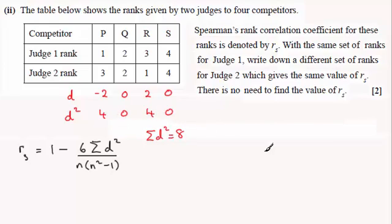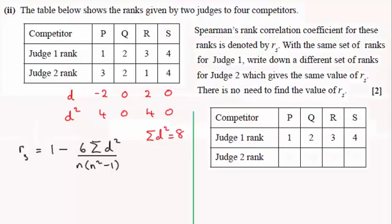What we've got to do is find another way of getting a total of 8. If I bring up that table again but this time leave out Judge 2's ranks, then in order to get the sum of the d squareds equaling 8, I can see that I've got to create a situation where the d's are minus 2, 0, 2, and 0.